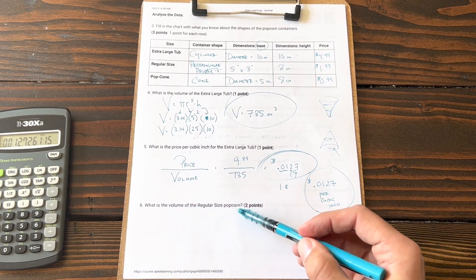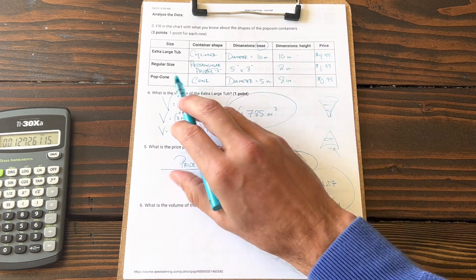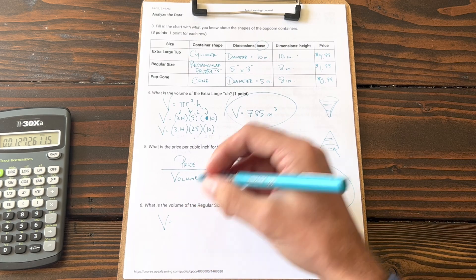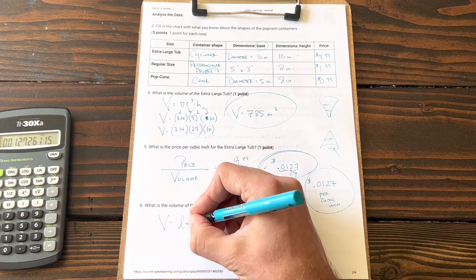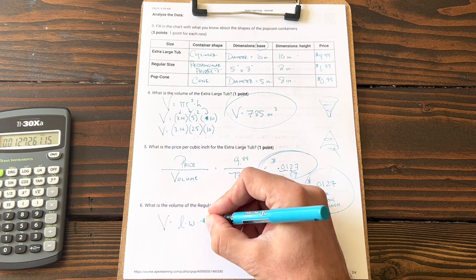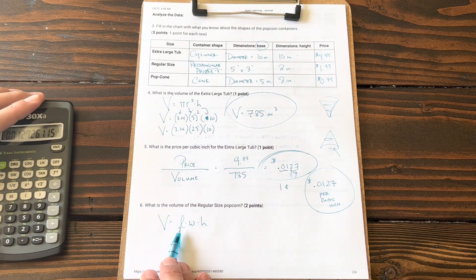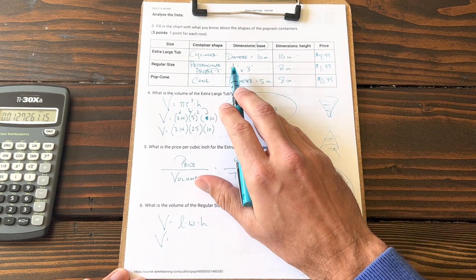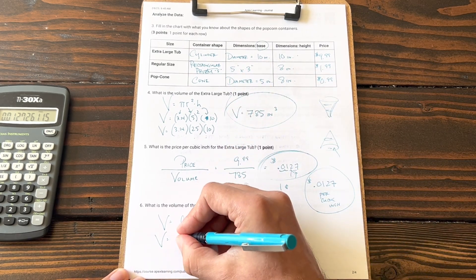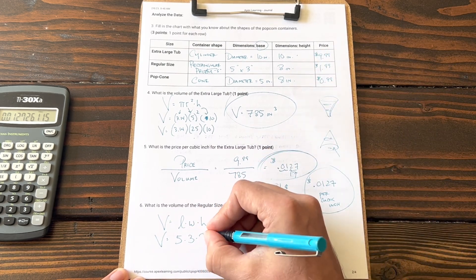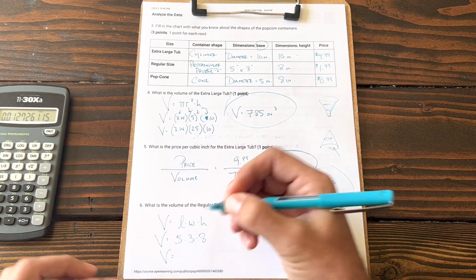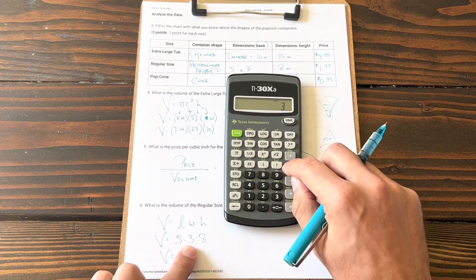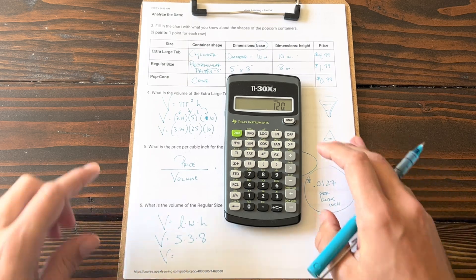What is the volume of the regular size popcorn? Volume formula for a rectangular prism is area of the base—so area of the rectangle, which is length times width—multiplied by the height. So the volume is going to be length times width times height. Let's substitute in: length and width of the base is 5 times 3, and the height is 8. Therefore, the volume of this rectangular prism is 120 inches cubed.